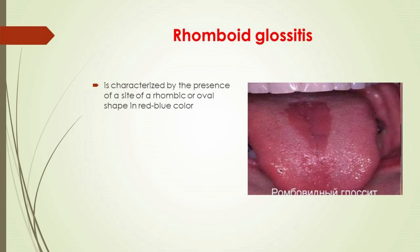Rhomboid glossitis is characterized by the presence of a site of rhombic or oval shape in red-blue color, located in the middle of the tongue in the region of the posterior third. The tongue is cracked in the center so the affected area appears divided into two parts. This type may be chronic, with exacerbations of pain and burning. Changes occur in the tongue mucosa in the midline, just anterior to the foramen cecum.